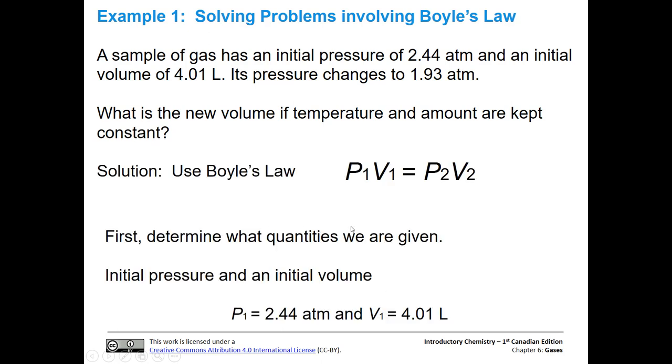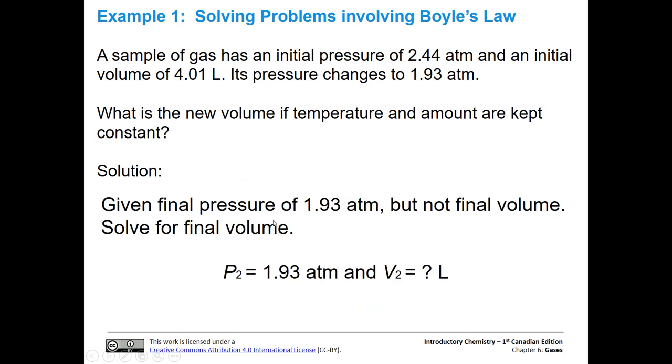So we're going to use Boyle's law, because we have pressure and volume involved, and we're keeping temperature and amount constant. So we just talked about this, but we're going to determine what quantities are given. And so we have our initial values, P1 and V1, as we discussed. And we also have P2, we have the final pressure.